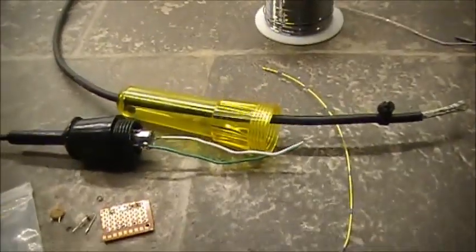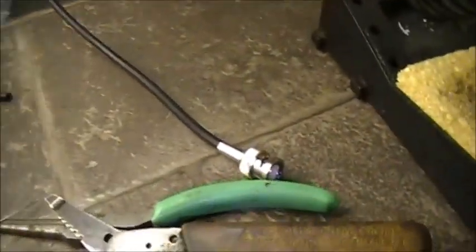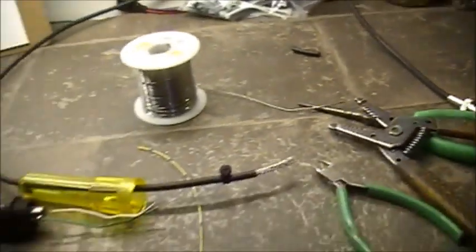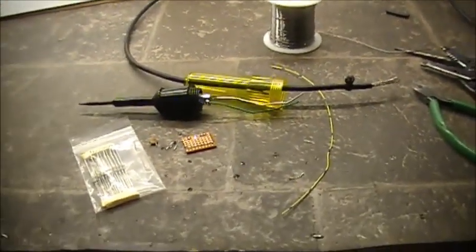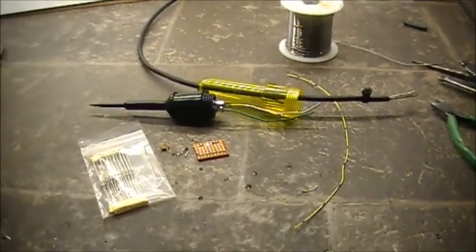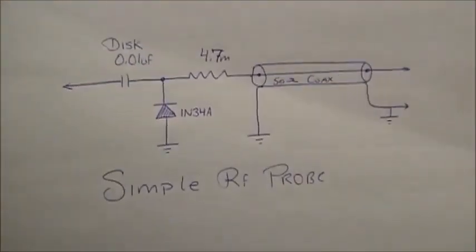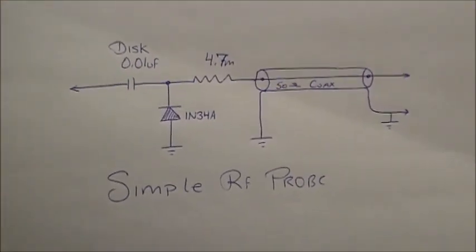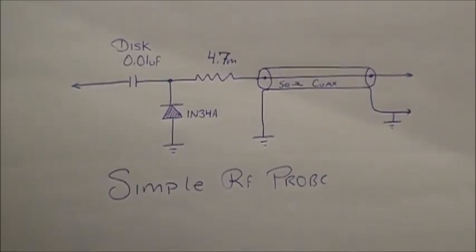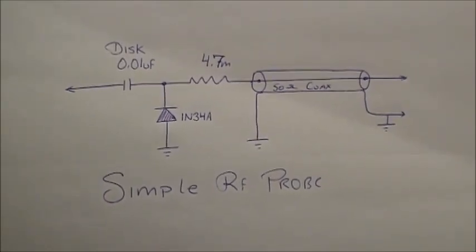And at your end, a piece of 58 cable to go to a BNC. Can you guess what I'm going to build? Yeah, I'm going to build myself a simple RF probe. That's the circuit and that's what we're going to build.